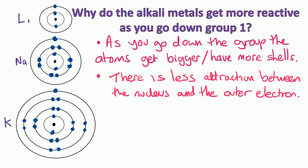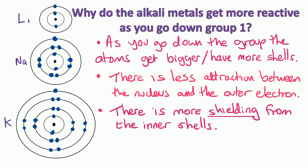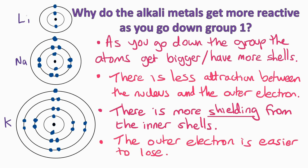In this case we're talking about an electrostatic attraction between the positive nucleus and the outer electron. On an atom like potassium, where that electron is a long way from the nucleus, there'll be less attraction. There's also more shielding from the inner shells as you go down the group. All of these factors mean the outer electron is much easier to lose — and that's why the alkali metals get more reactive down the group.